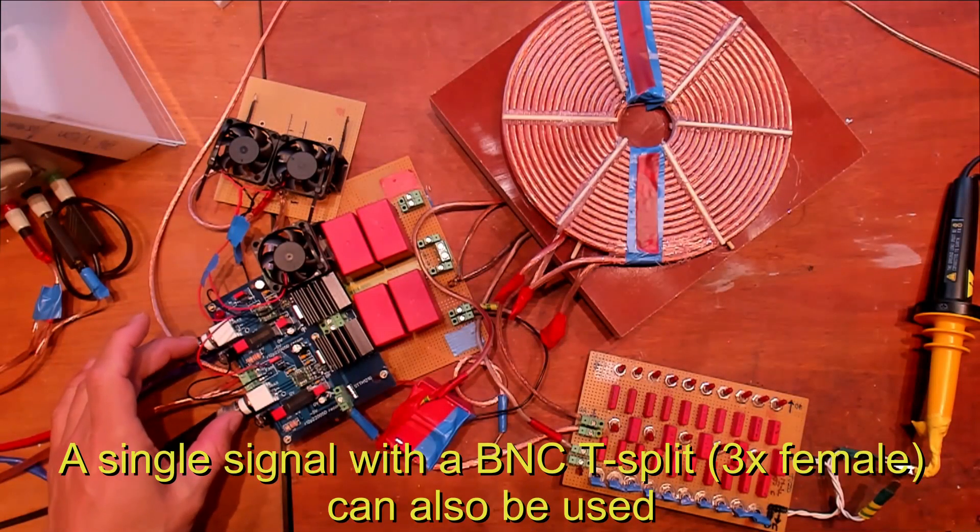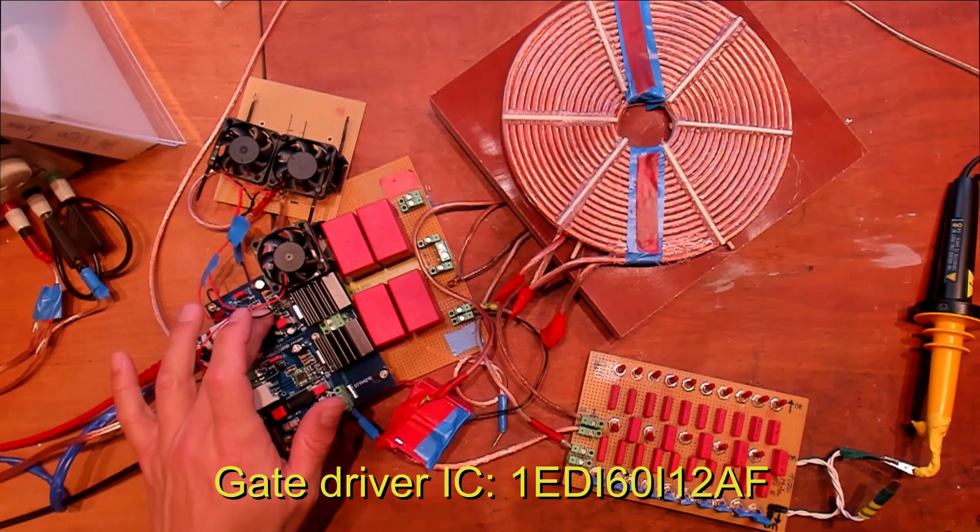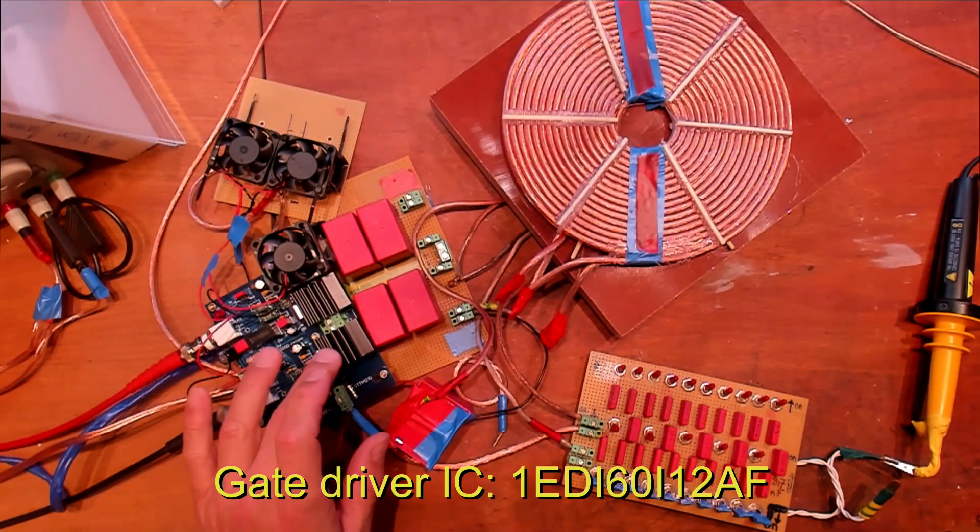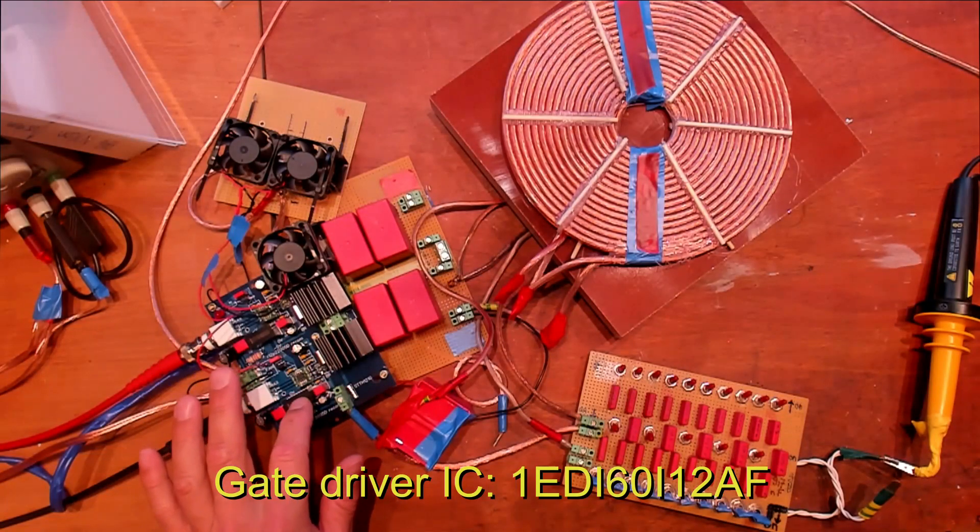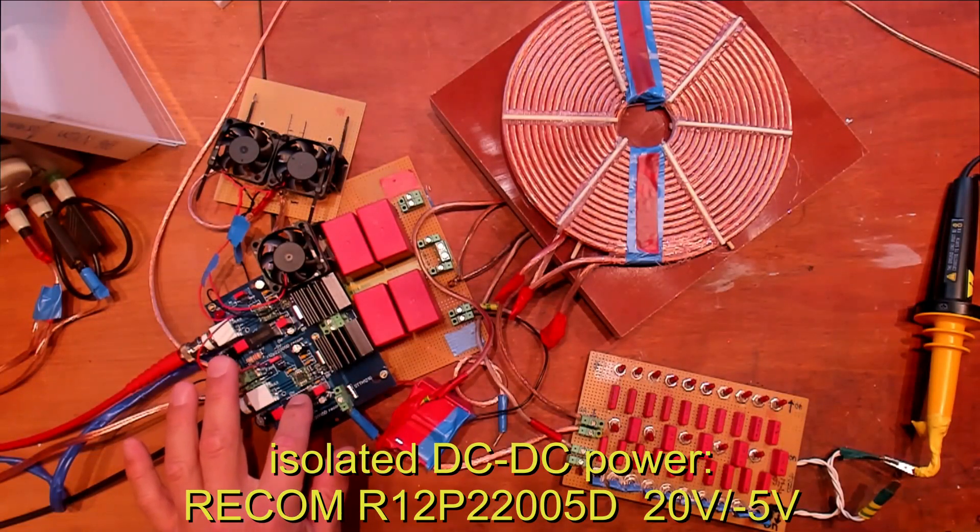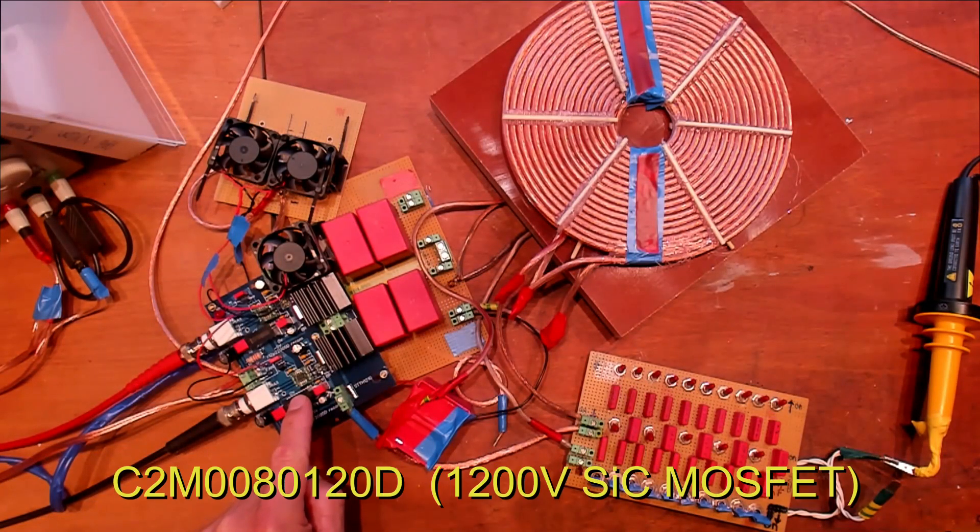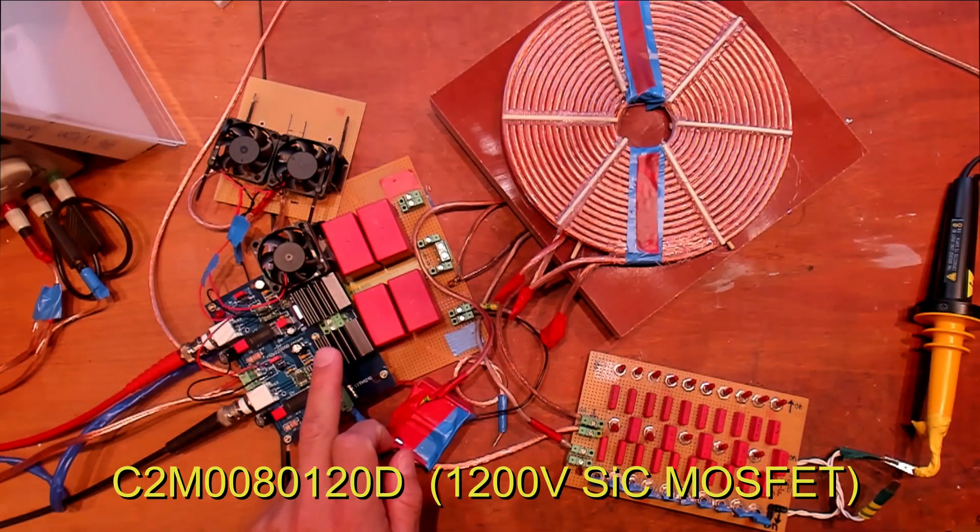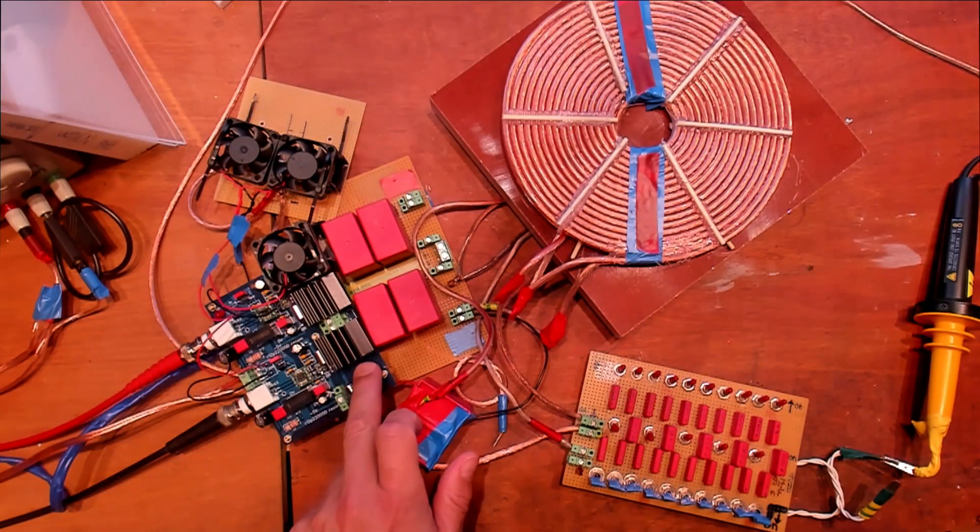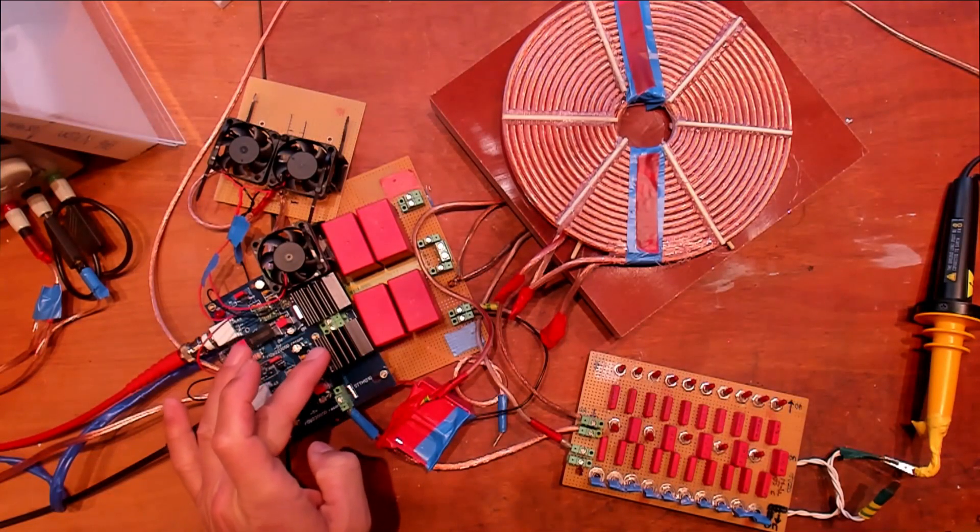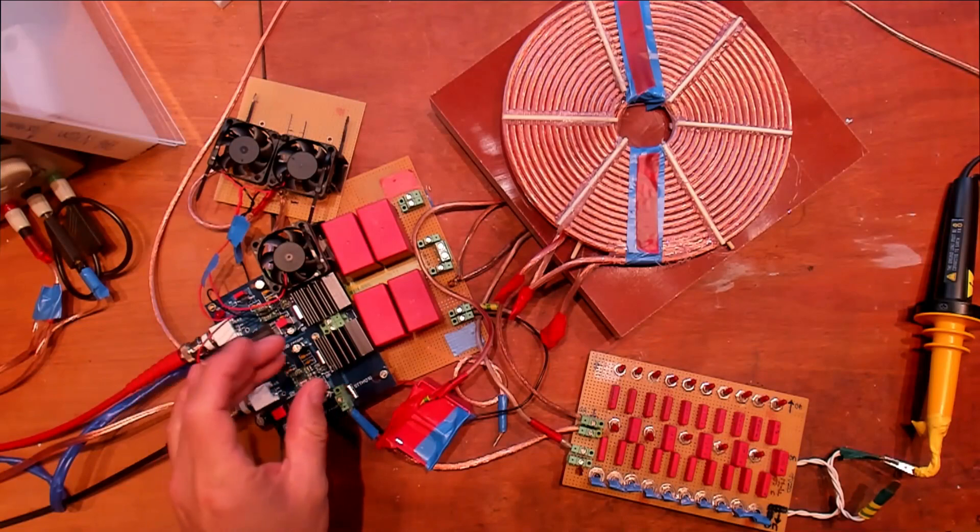Each MOSFET has its own gate driver IC and its own isolated DC to DC power driver, which gives these MOSFETs 20 volts positive and minus 5 volts negative to switch the gate. The MOSFETs right now are the C2M0080120D. These are capable of at least 1200 volts, but in testing I've seen they can handle 1500 volts.